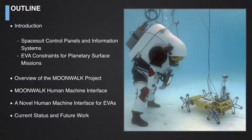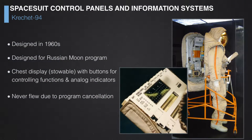The spacesuit control panels and information systems installed on current and previous spacesuits have been evolving through the 20th and 21st century. There are many kinds of spacesuits and systems that have been used to convey information to the astronaut. A remarkable example in the context of our project is the control panel on the Krechet-94 spacesuit, designed in the 1960s to provide information to the astronaut for the Soviet Moon mission.